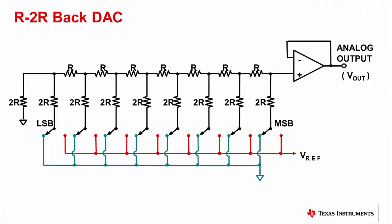The R2R DAC is a more complex method of realizing a DAC than, for instance, a string DAC. The chief benefit of the R2R DAC is that the number of resistors required to realize the design is much fewer than the string DAC. We only need one R and 2R pair for each bit of resolution.